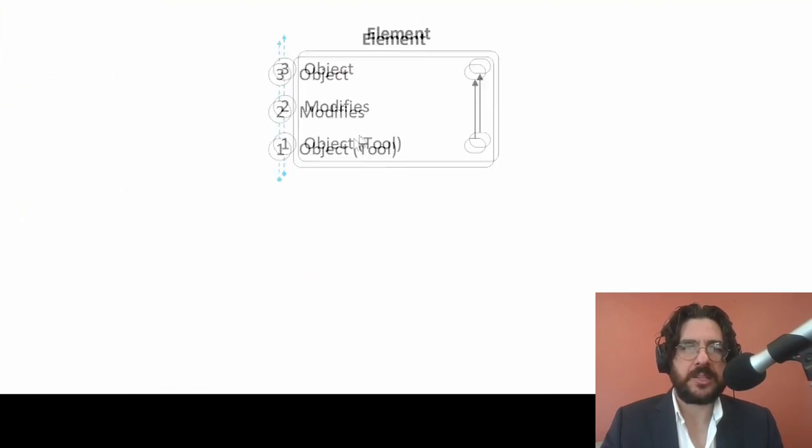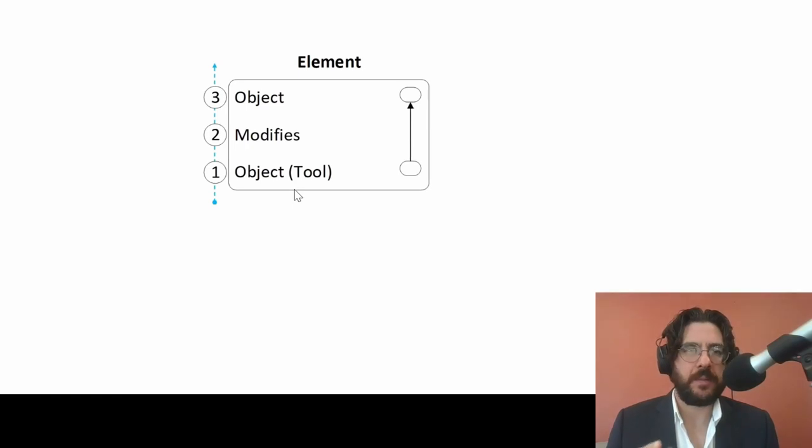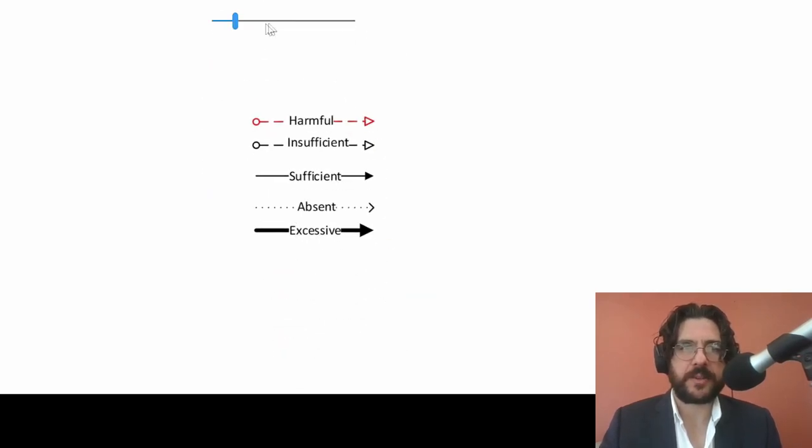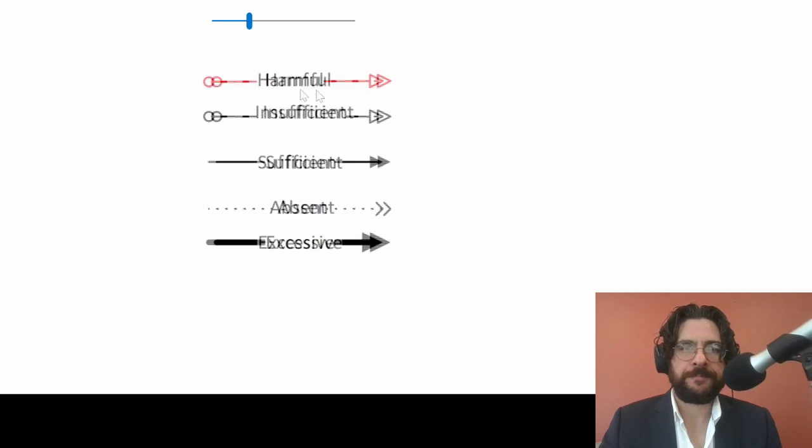Now, in just a minute, I'm going to take us into what we call an element. I'll do that in the next video. But for this video, I want to talk about this middle one here, number two. We call this a modification or we call this a relationship. What we're going to see in just a minute when we get into functions is where an object modifies a tool. There's that modification that sits in between two objects, and we want to describe that modification. That's what we're going to look at right now.